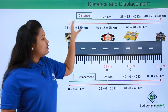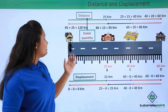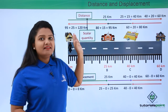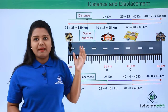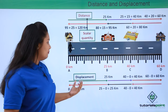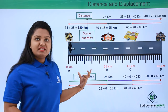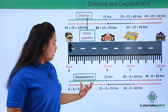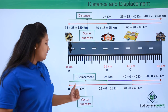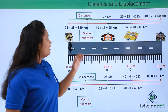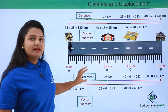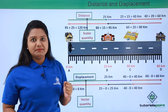From this we say that distance is a quantity independent of the direction of a body — such quantities are called scalar quantities, which are concerned only with magnitude and not direction. But quantities like displacement, which also take into account the direction of the moving body, are called vector quantities. So distance is a scalar quantity and displacement is a vector quantity.